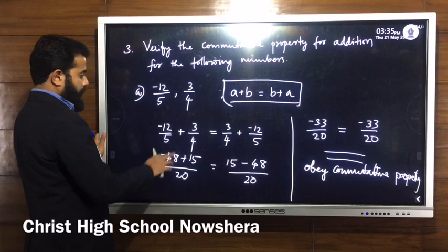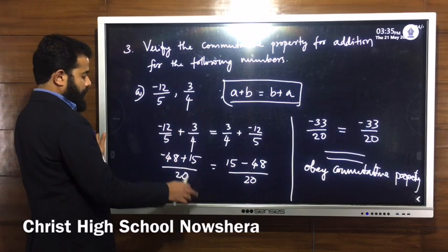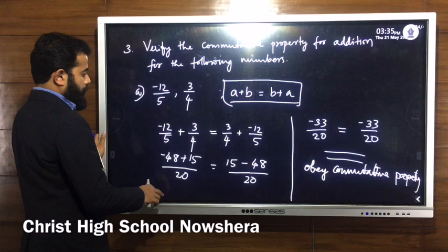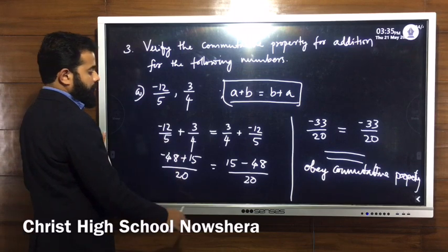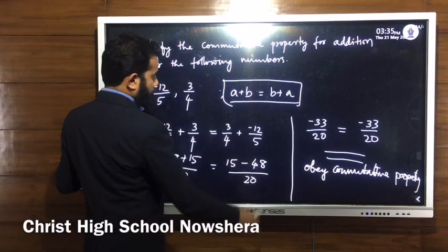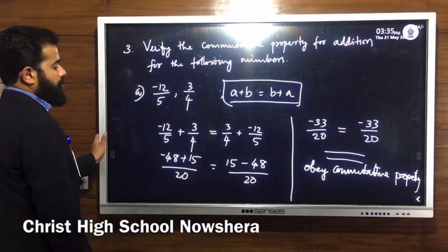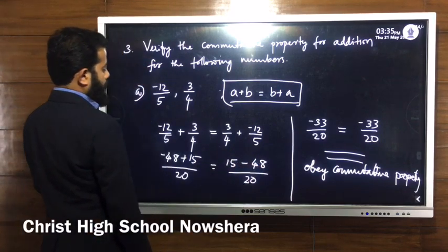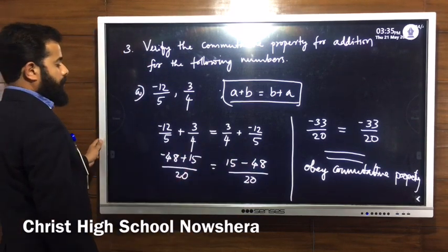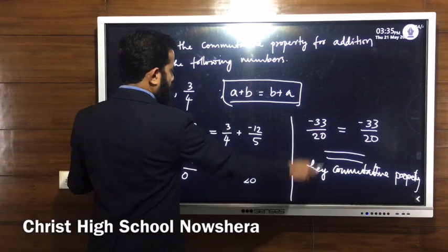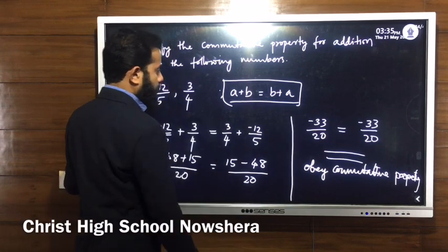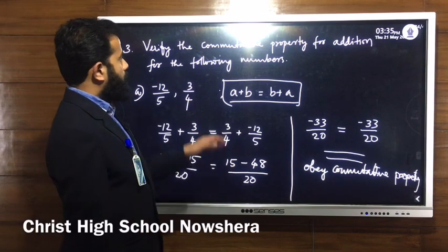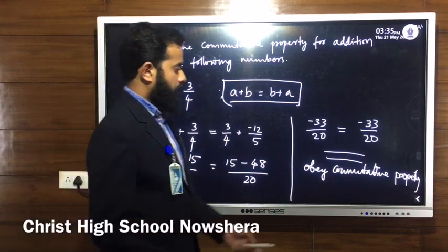So: minus 12 by 5 plus 3 by 4 equals 3 by 4 plus minus 12 by 5. Doing cross multiplication on both sides: left side gives 4 into minus 12 = minus 48 and 5 into 3 = 15, giving minus 33 by 20. Right side gives 5 into 3 = 15 and 4 into minus 12 = minus 48, also giving minus 33 by 20. So LHS equals RHS.